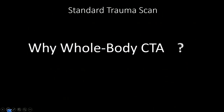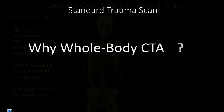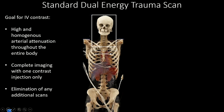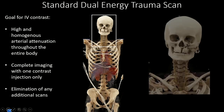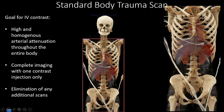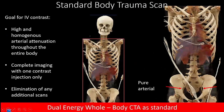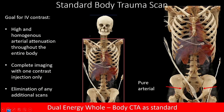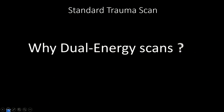So why a whole-body CTA for trauma patients? You would like to have arterial contrast from the neck down to the pelvis, and it should be diagnostic in all body parts. The reason for that is, especially in the body and abdomen area, it's very important to have more than one phase of contrast.